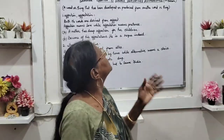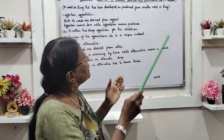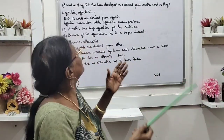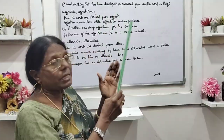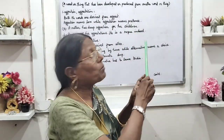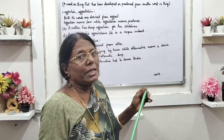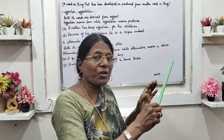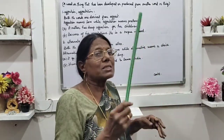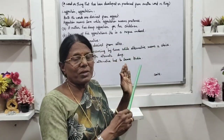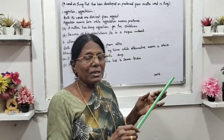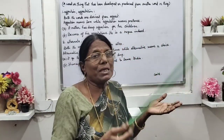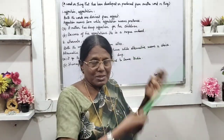Welcome to my grammar class. Today I am going to take a double derivatives distinguished. Now what is a derivative? It is a word or a thing that has been developed or produced from another word or thing — that is called a derivative. For example, 'happiness' is derived from the word 'happy.' I have selected some words since they are useful to all, keeping the number small so that everybody can spend time watching.